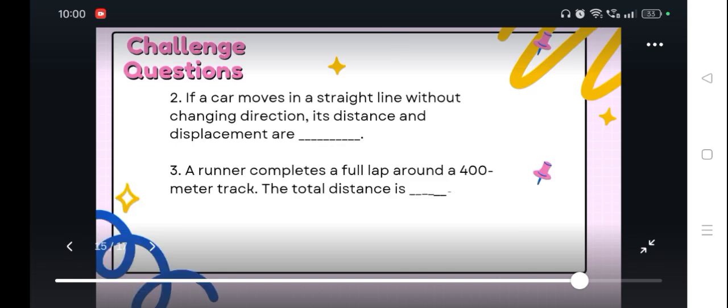Question number 2, or item number 2. You can always go back with number 1 if you're not done with it. If a car moves in a straight line without changing direction, its distance and displacement are blank.